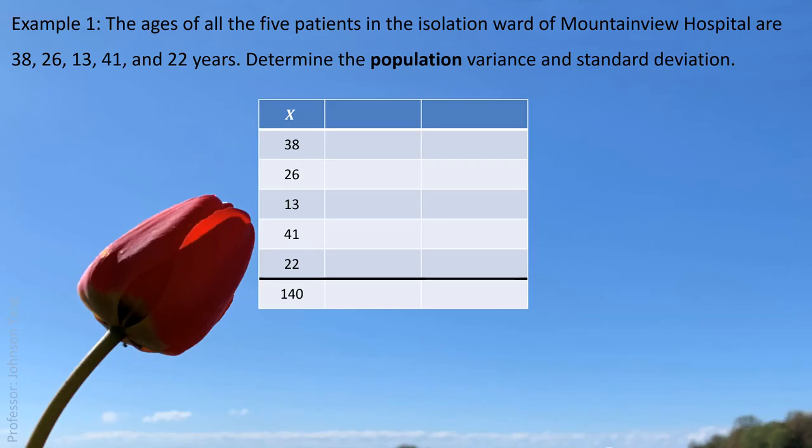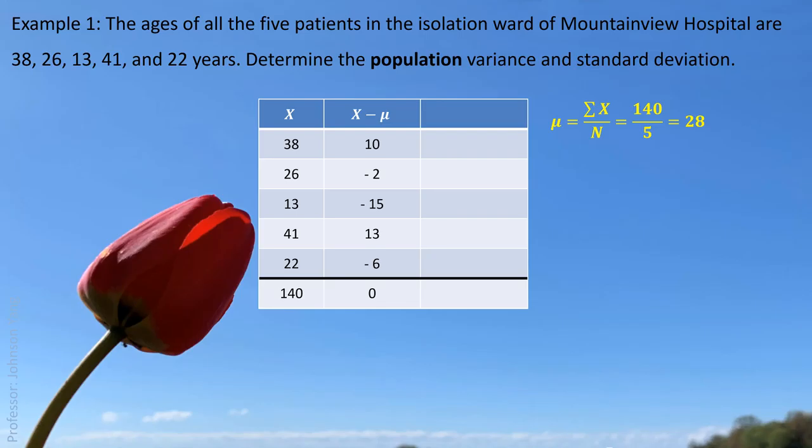Our original data is listed in the first column. We use random variable X to represent every possible value of the age we collected. At the bottom, we have the total: 140. With this total, we can simply calculate the mean or center value, which is 28. With this center, we can calculate the difference for every individual value. That means 38 minus 28 gives us 10; 26 minus 28 gives us negative 2. We do all the differences for every individual value to the center 28. And we can see clearly that if we add them all together, the sum would be zero.